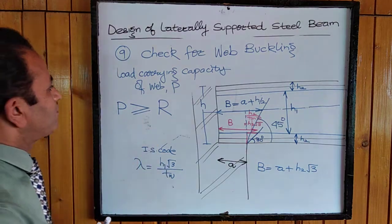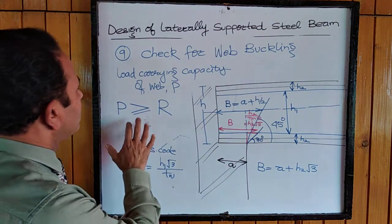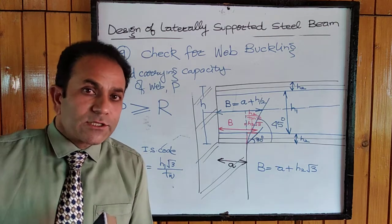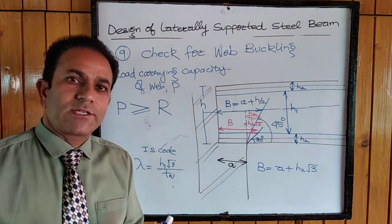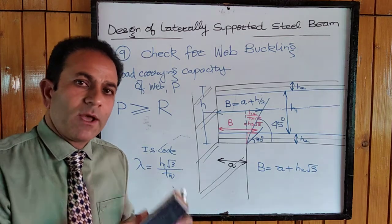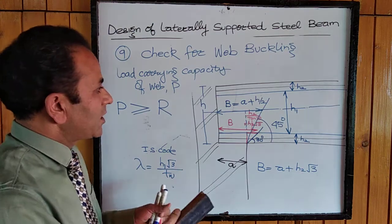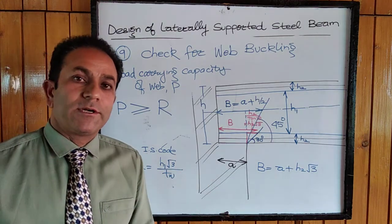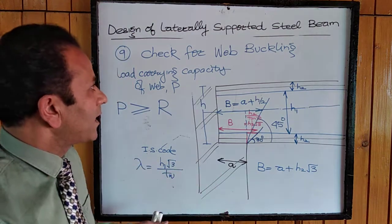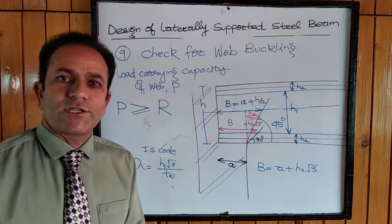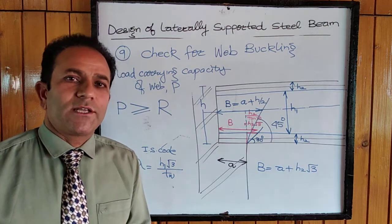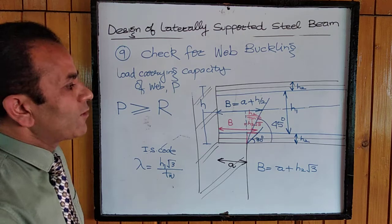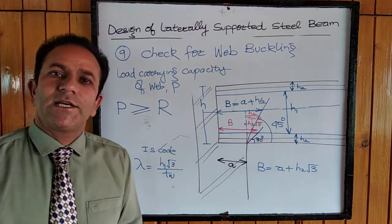If the load carrying capacity is greater than or equal to the shear or end reaction R, the section is safe in web buckling. If the section passes all checks — shear, deflection, web crippling, and web buckling — that section can be used as the steel beam. If not, we revise the section.